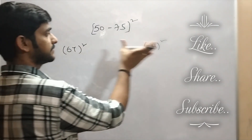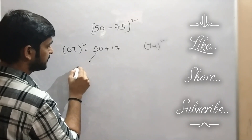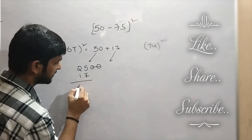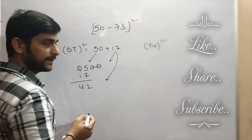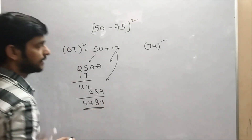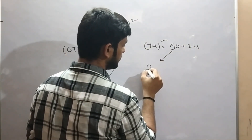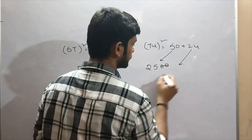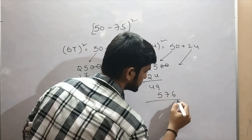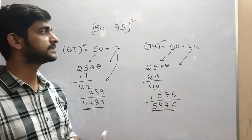Now let's consider the numbers 67 and 74. 67 I can write it as 50 plus 17. Taking 2500 and removing the last 2 digits, add 17 to 25 — here we are getting 42. And 17 squared will be 289. So the answer will be 4489. Now for 74, which will be 50 plus 24. Taking 2500, neglect the last 2, and adding 24 gives 49. And 24 squared will be 576. So 5476 will be the answer for 74 squared.